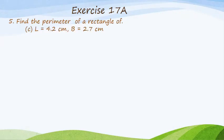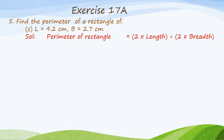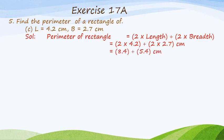Let's come to the fifth question of this exercise: Find the perimeter of a rectangle where length is 4.2 cm and breadth is 2.7 cm. Perimeter of a rectangle is equal to 2 multiplied by length plus 2 multiplied by breadth. So, 2 multiplied by 4.2 plus 2 multiplied by 2.7 cm — 2 times 4.2 equals 8.4 and 2 times 2.7 equals 5.4, and 8.4 plus 5.4 cm equals 13.8 cm. This is the perimeter of the rectangle.